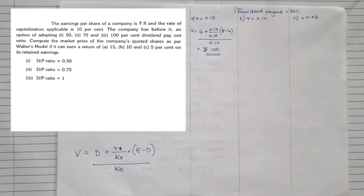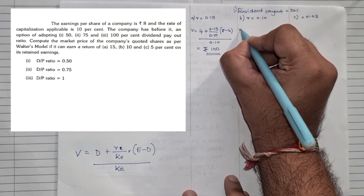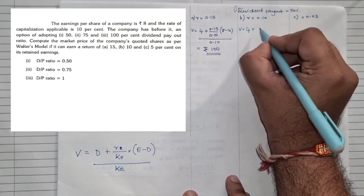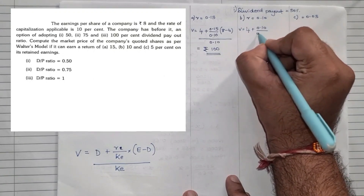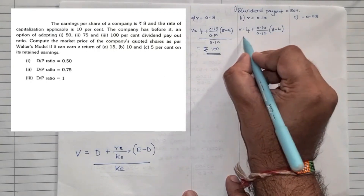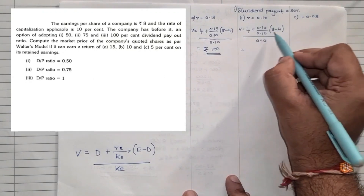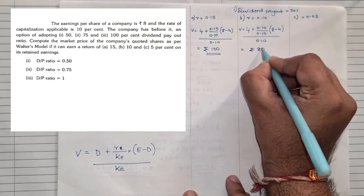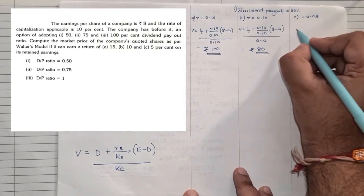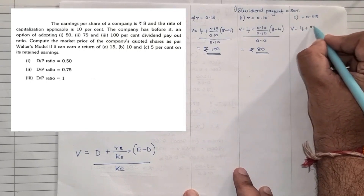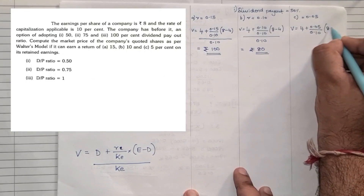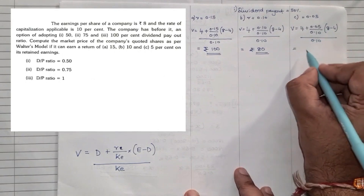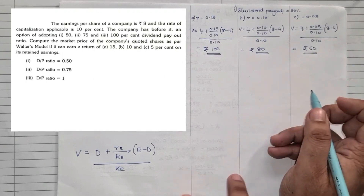Still under 50% dividend payout (D = Rs. 4): Case B (r = 0.10): V = 4 + (0.10/0.10)(8 − 4) / 0.10 = Rs. 80. Case C (r = 0.05): V = 4 + (0.05/0.10)(8 − 4) / 0.10 = Rs. 60. Apply the same logic — subtract, divide, multiply, add, then divide by Ke — to get Rs. 80 and Rs. 60 respectively.